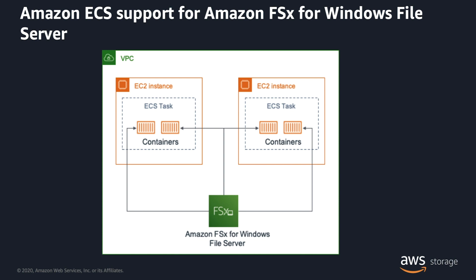In this demo, I am going to demonstrate how to create a new Amazon FSx for Windows File Server and configure it as a shared file system for my Windows containers. My first container will run an IIS web server with its content stored on the FSx file system. I will modify my web page from a second container that will have access to the same shared file system, and demonstrate how easy it is to share data between containers while persisting data on the FSx file system.